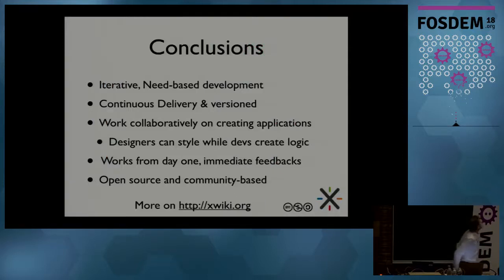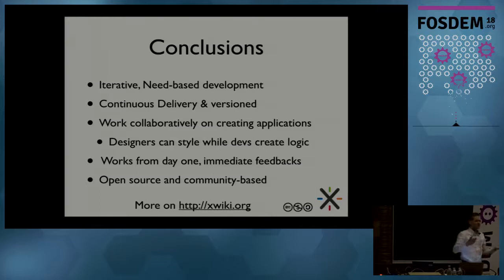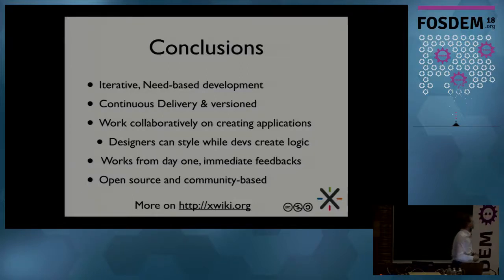In conclusion, we have a way of developing applications in an iterative way, because everything is in wiki pages, and wiki pages are versioned. You can progressively make modifications, go back, do that collaboratively with several people, compare what they've done with diffs. It's continuous delivery — as soon as you make modifications in the wiki page and save it, the change executes immediately, and you get to see the result. If you don't like it, you can roll back or edit to make more modifications.